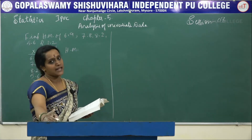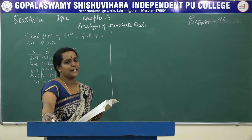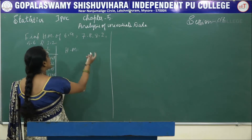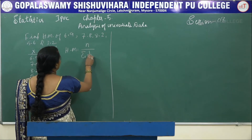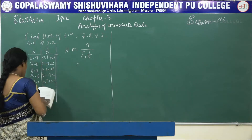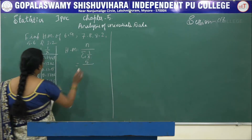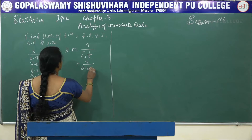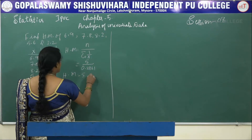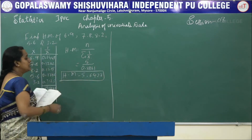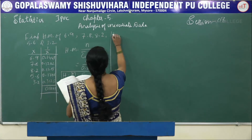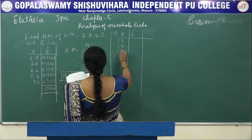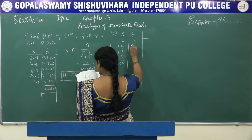The formula of AM is summation X divided by N. Since we have taken the reciprocal of the observations, we take the reciprocal of AM, which gives N divided by summation of 1/X. Here N is 5, and summation of 1/X is 0.8861. So HM is equal to 5 divided by 0.8861, which equals 5.6427.